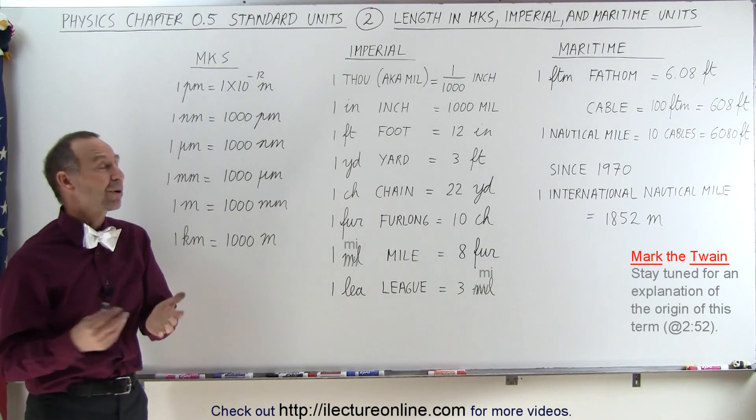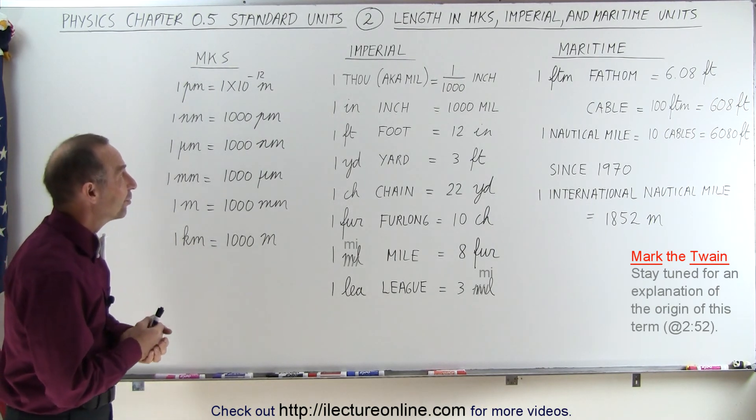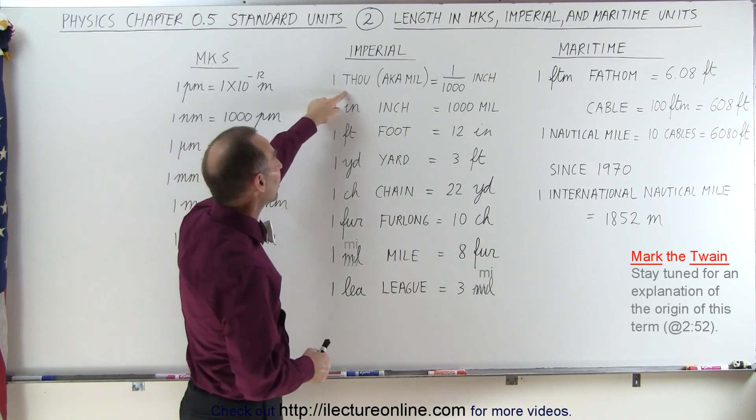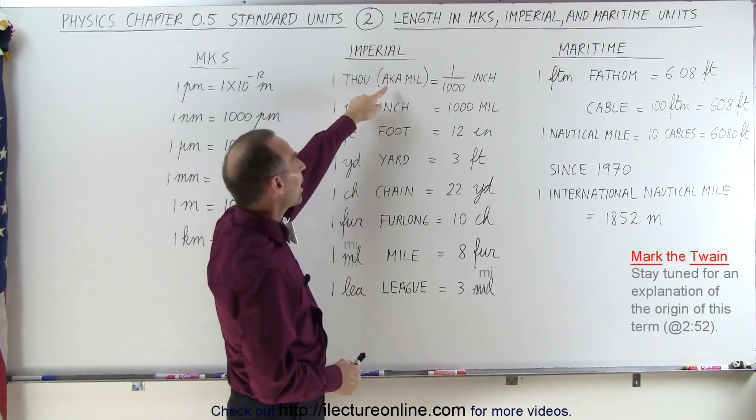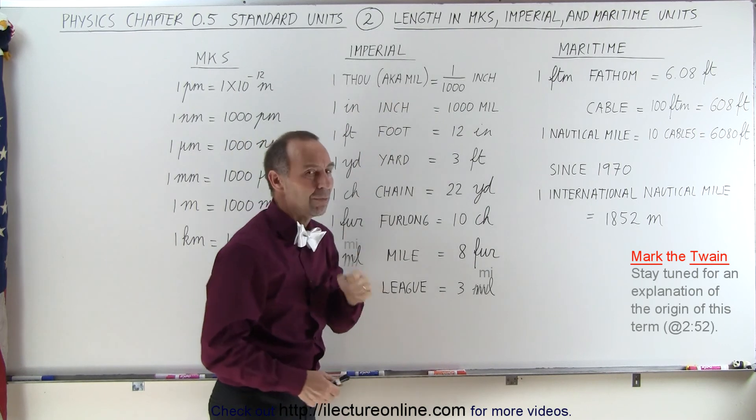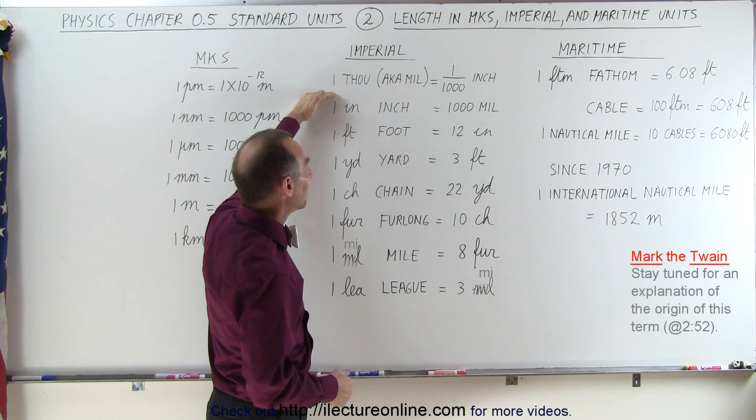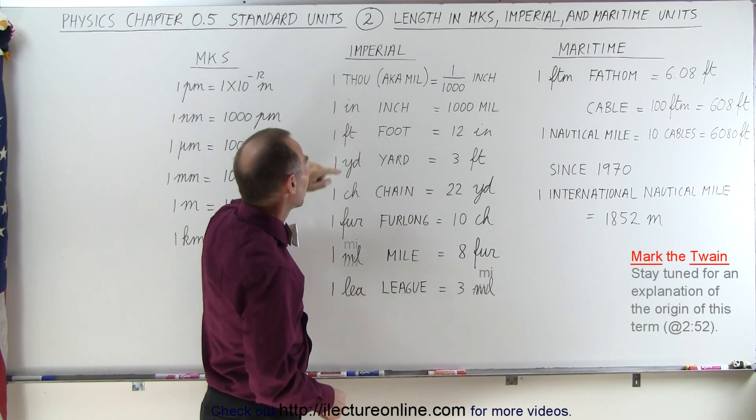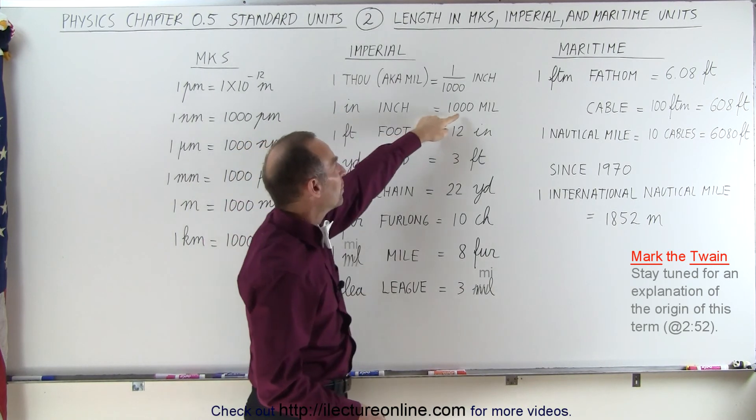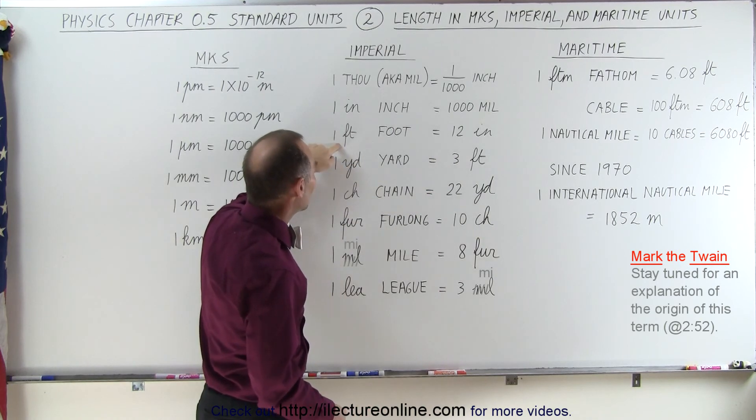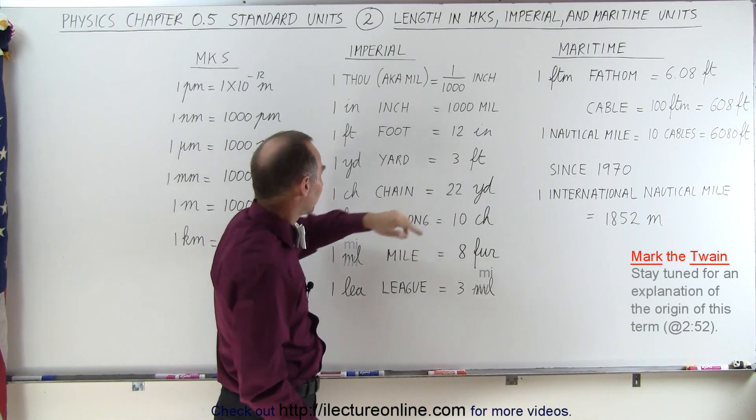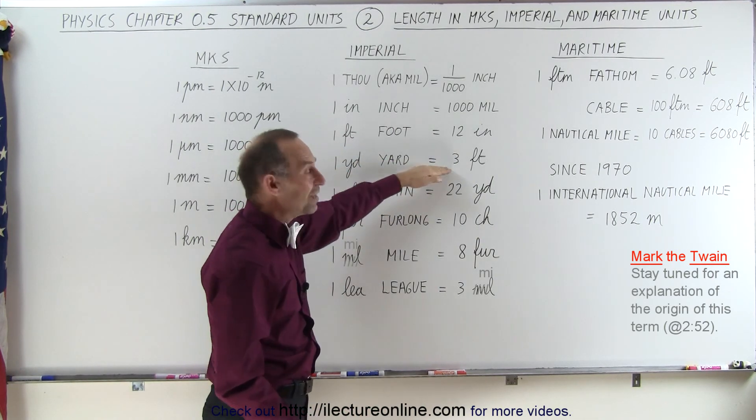Now let's take a look at the Imperial units. Well, it turns out there is a unit called a thou, but it's most commonly known as a mill. A mill is one one-thousandth of an inch and is actually still used quite a bit in engineering. An inch is a thousand mil, a foot is 12 inches, and a yard is three feet.